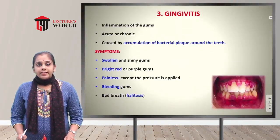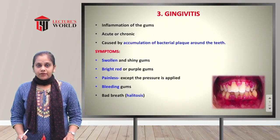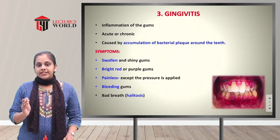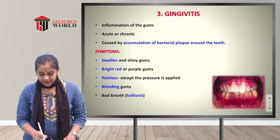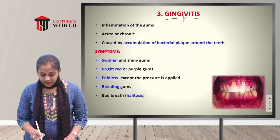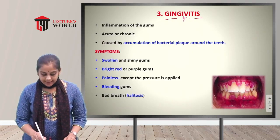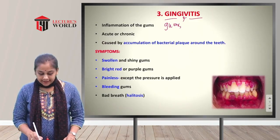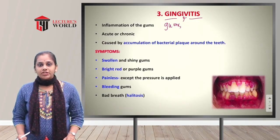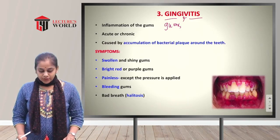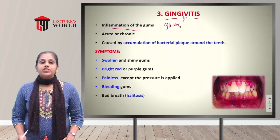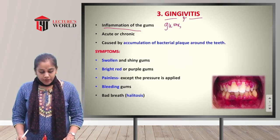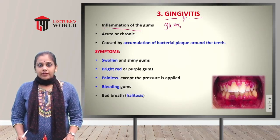The third disease condition is gingivitis. 'Gingiva' means gums, and 'itis' means inflammation, so gingivitis is inflammation or infection of the gums. It may be acute — occurring suddenly and resolving in days or weeks — or chronic, occurring gradually with poor prognosis, lasting months or years.